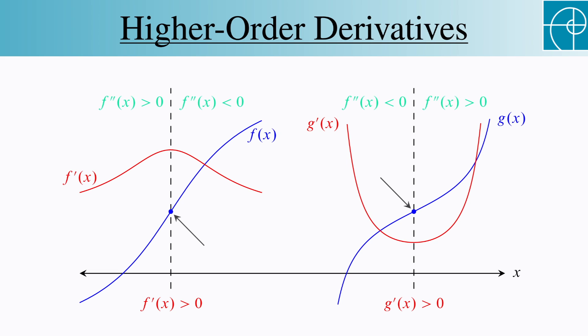Now look at the points on the original graphs where the vertical lines cross them. These are where the graphs change concavity, and we have a name for them.